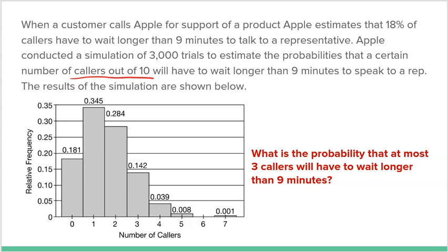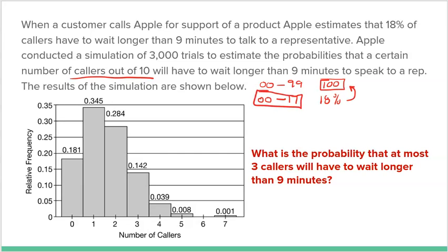How would you actually go about conducting the simulation? I'm giving you the results, but we should think about how it was conducted. They probably used numbers zero through 99 — there are 100 numbers. They assigned zero through 17 to be the 18% of numbers representing calls that take over nine minutes to talk to a representative.